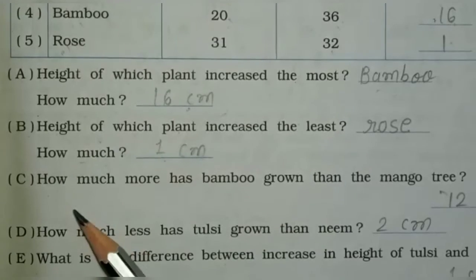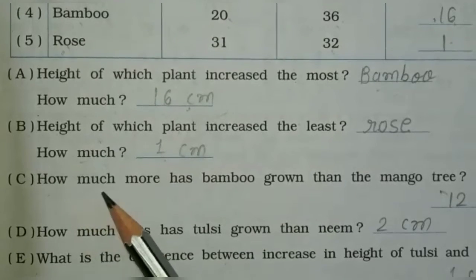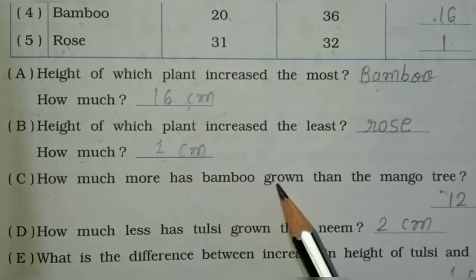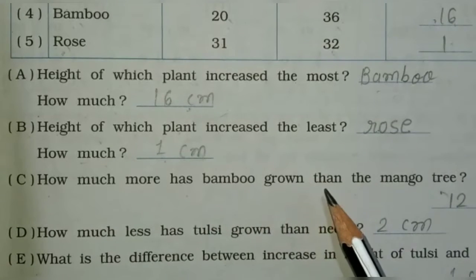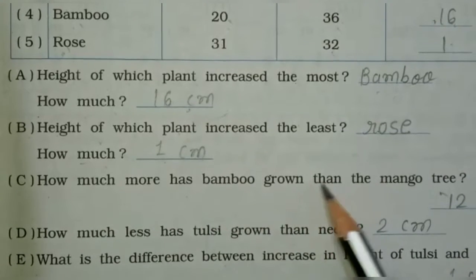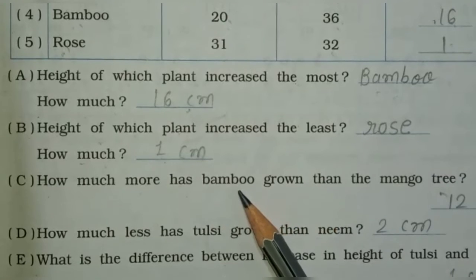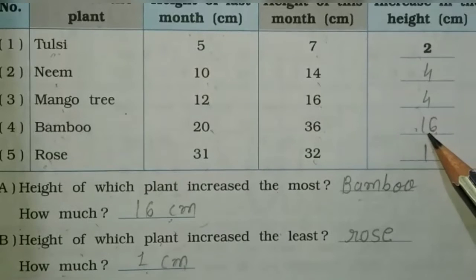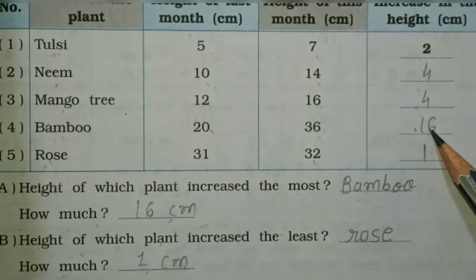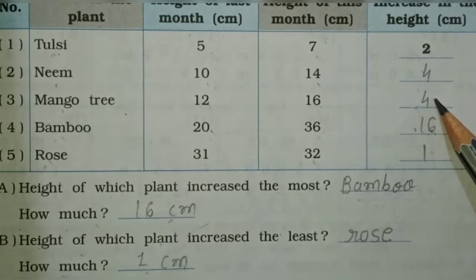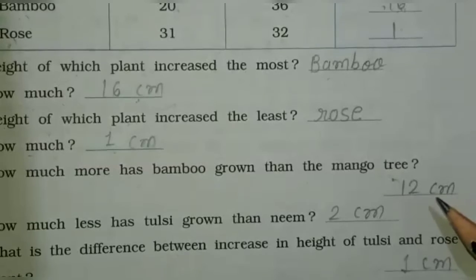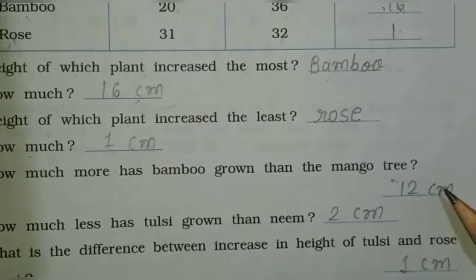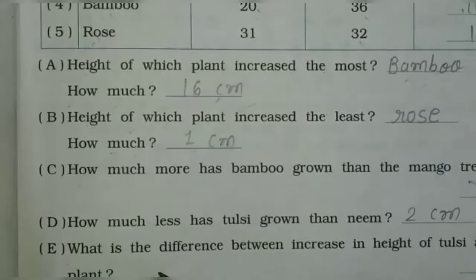Next question: how much more has bamboo grown than the mango tree? Yani, mango tree se bamboo kitna zyada bada hua hai? Bamboo increased 16 centimeters and mango tree 4 centimeters, so 16 minus 4 is equal to 12 centimeters.